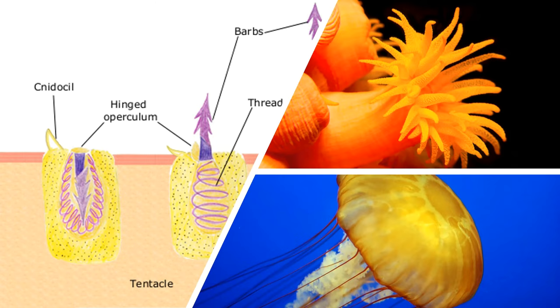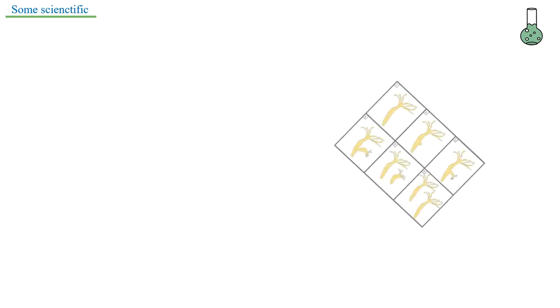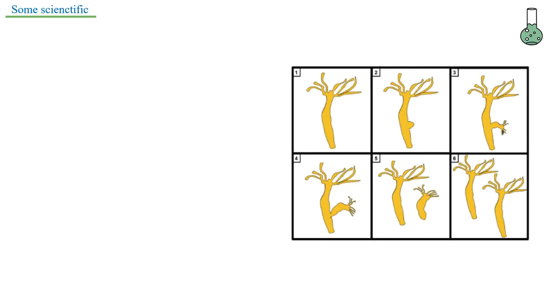Next we have the reproduction cycle of hydras. In normal conditions when they thrive, they will likely clone themselves by budding, like trees budding out of their parents. You can see here there's a bud that starts to grow out and then it separates and becomes a new hydra with the exact same DNA as its mother.